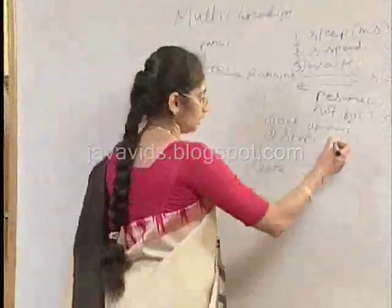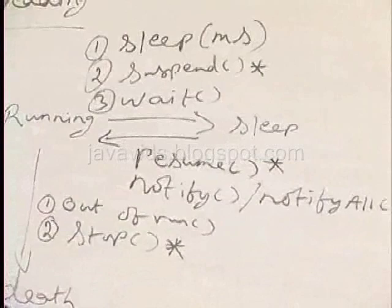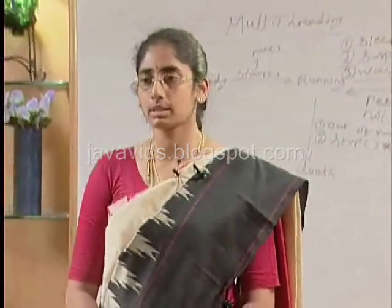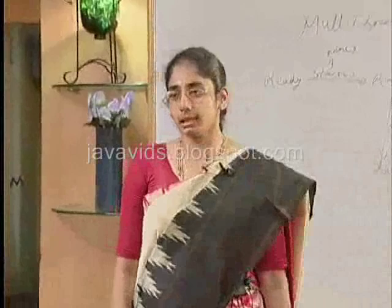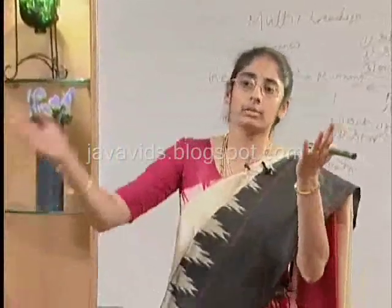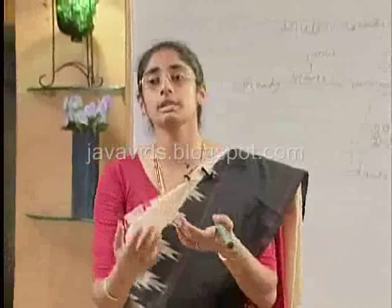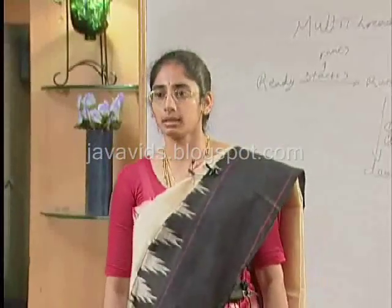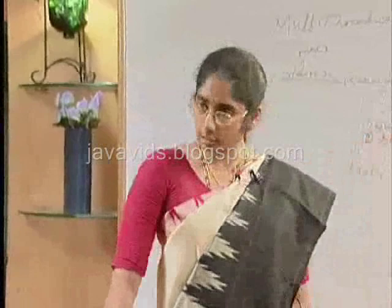Since JDK 1.2, the stop, suspend, and resume methods have been deprecated, meaning you should no longer use them. You get only a warning if you use them, not an error, but ideally you should not. The reason stop was deprecated: if thread 2 calls stop on thread 1 while thread 1 is working with some resource, it abruptly exits execution, leaving resources in a corrupt or damaged state. So if you want to come out of execution, do so with proper conditions — that is why stop has been deprecated.